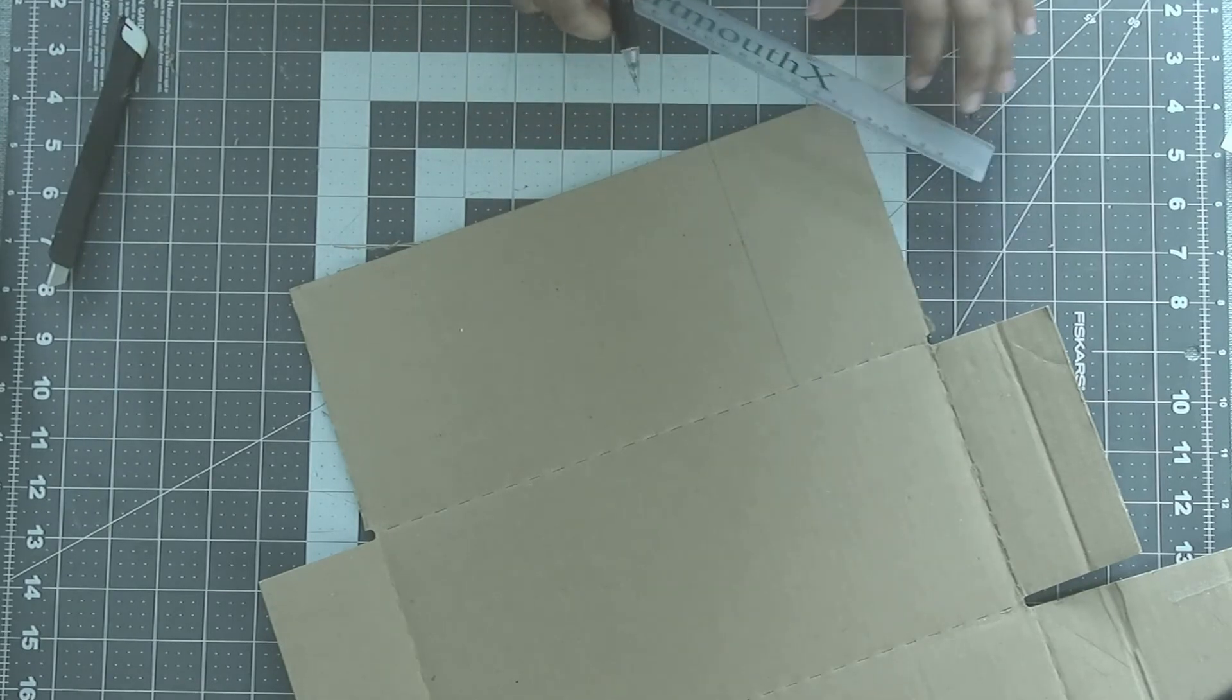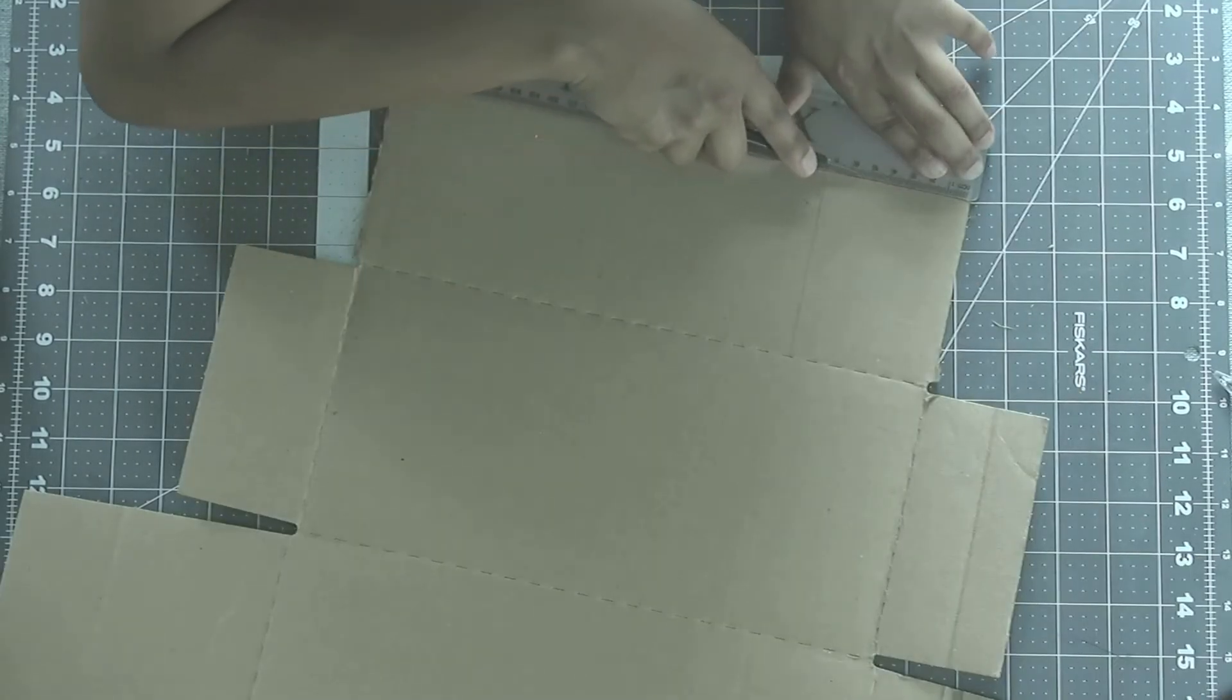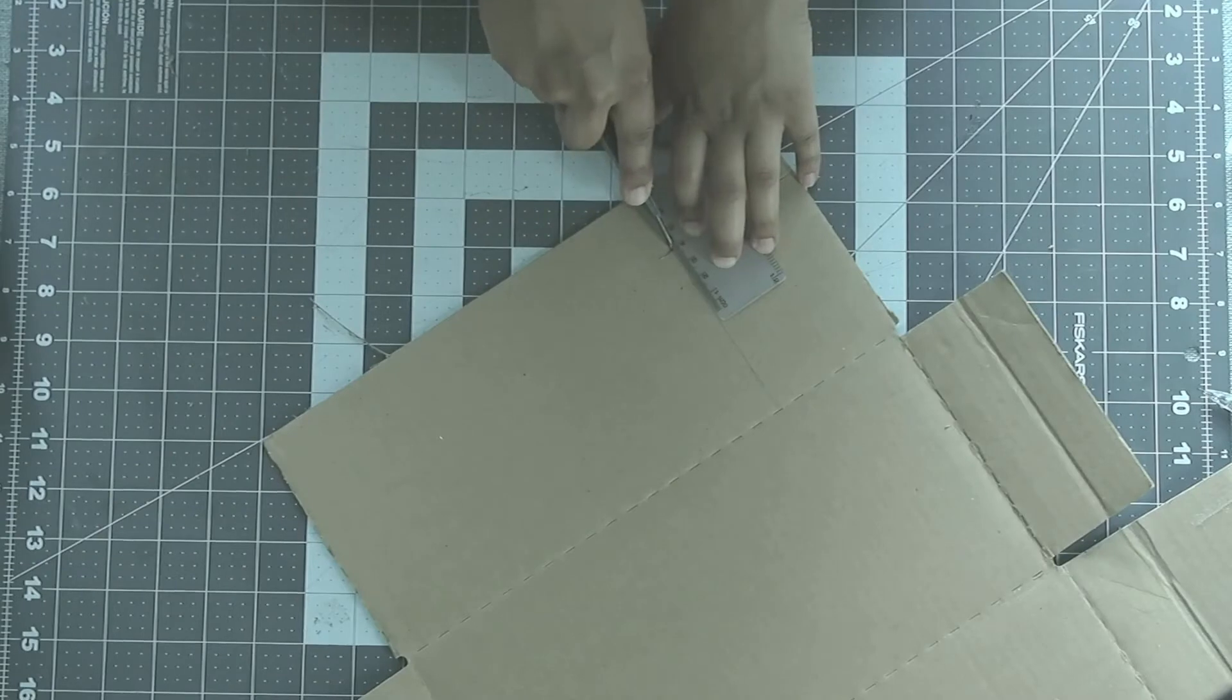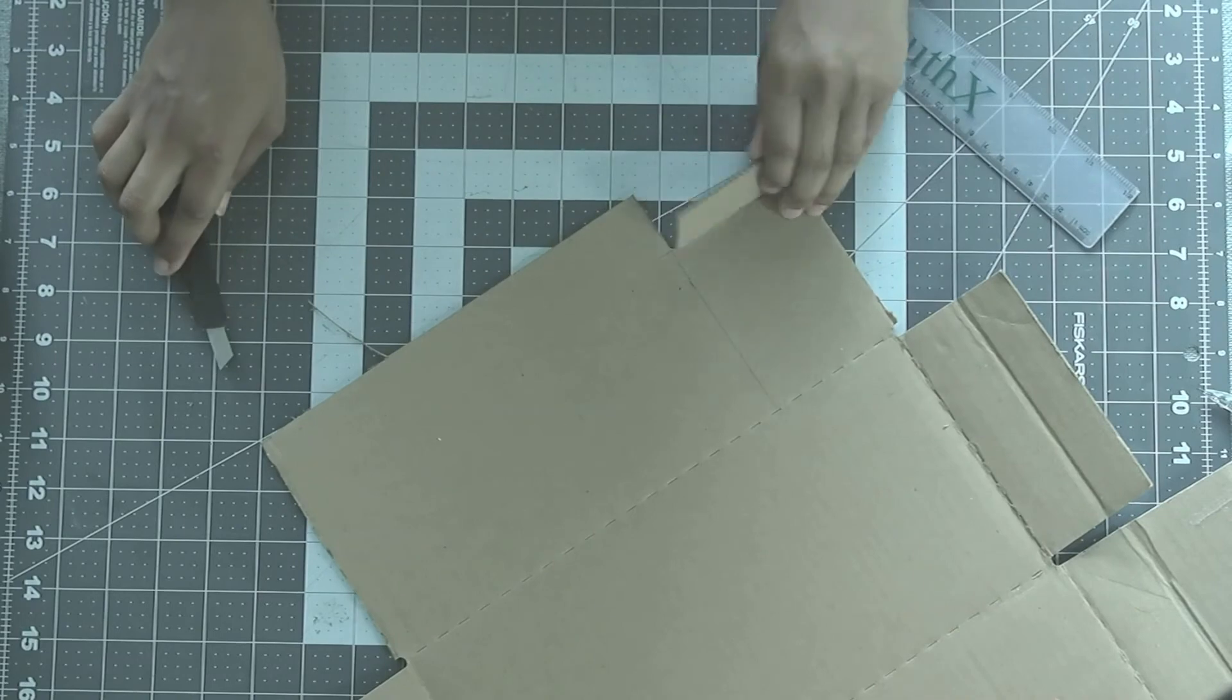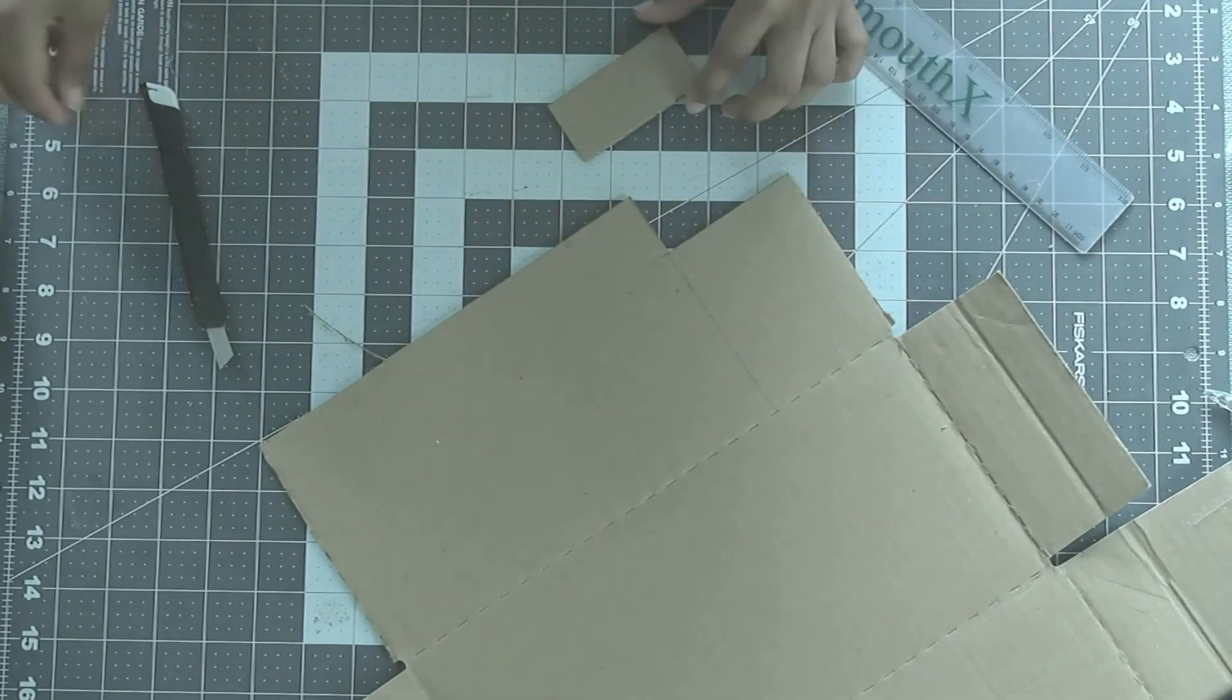Measure and cut out the dimension figures for the wing, fuselage, and horizontal stabilizer. We recommend using a box cutter for the cleanest cuts, but be careful not to hurt yourself. If you feel more comfortable, feel free to use scissors instead.